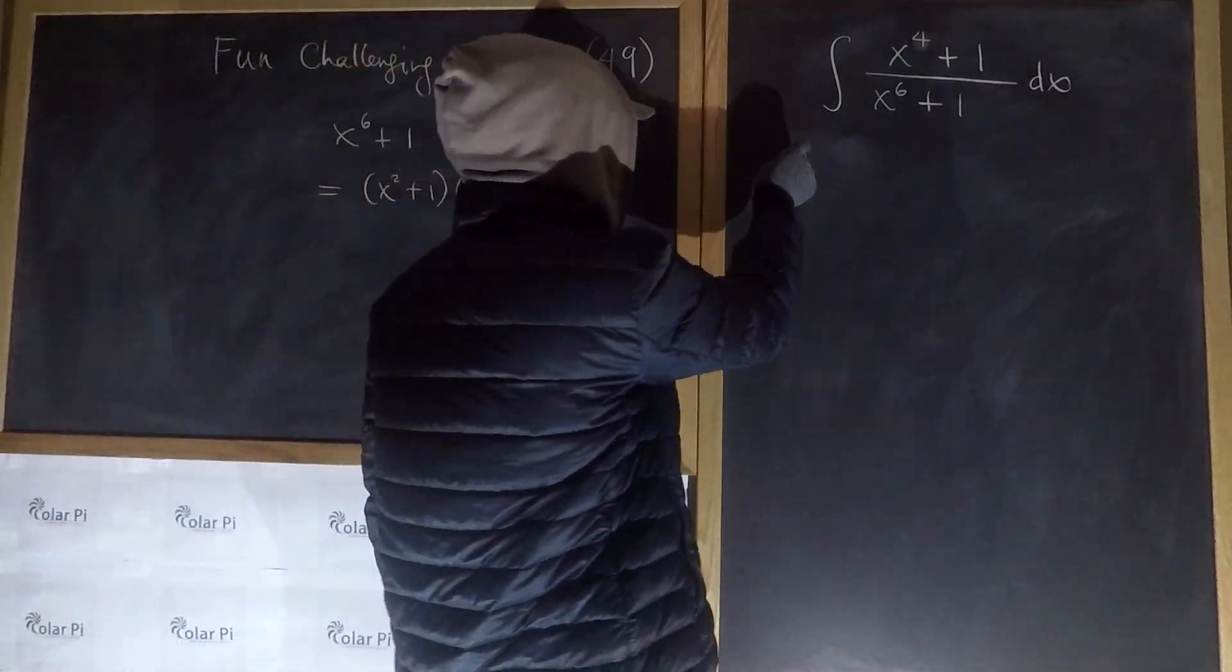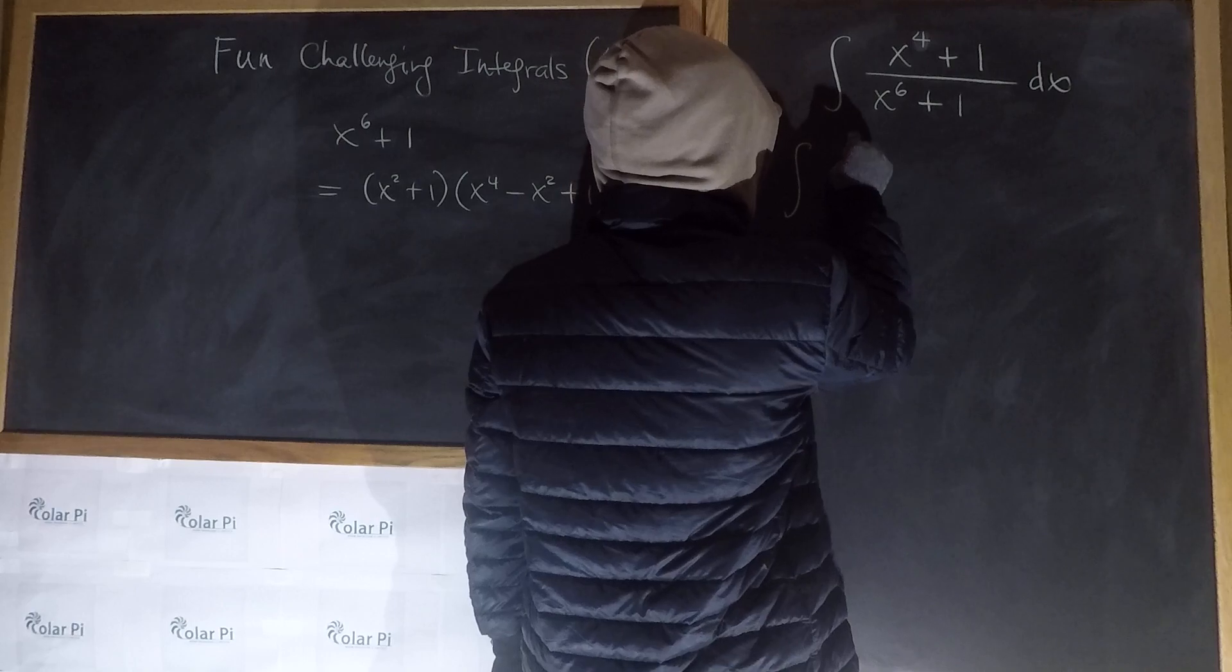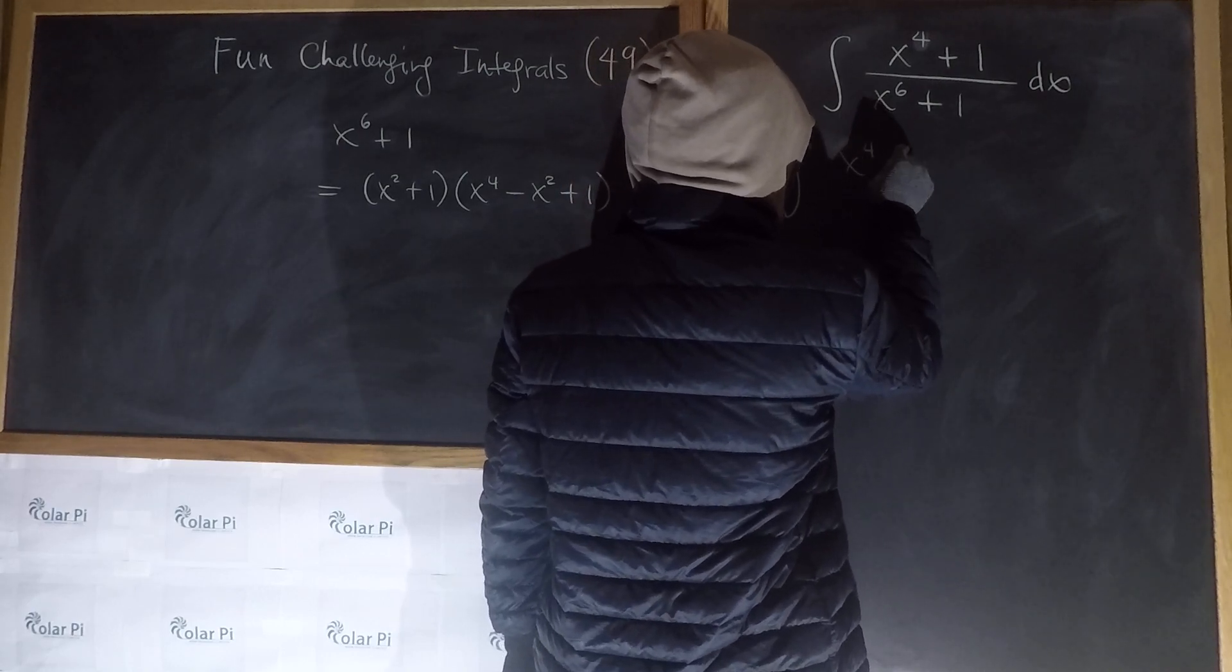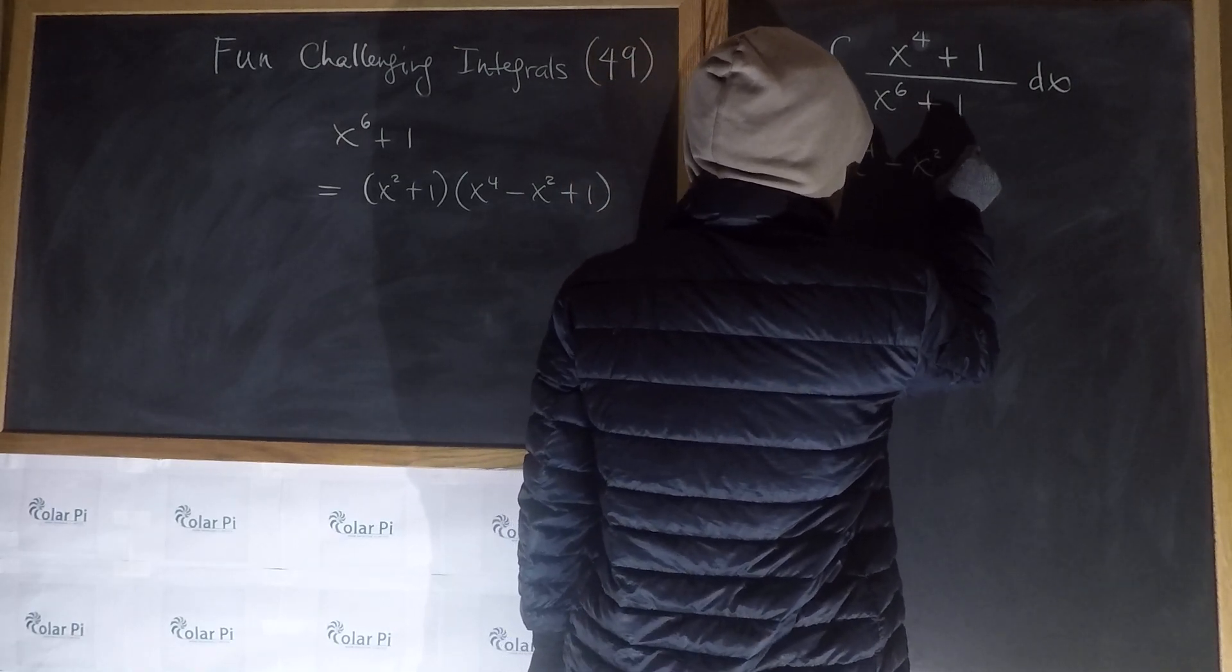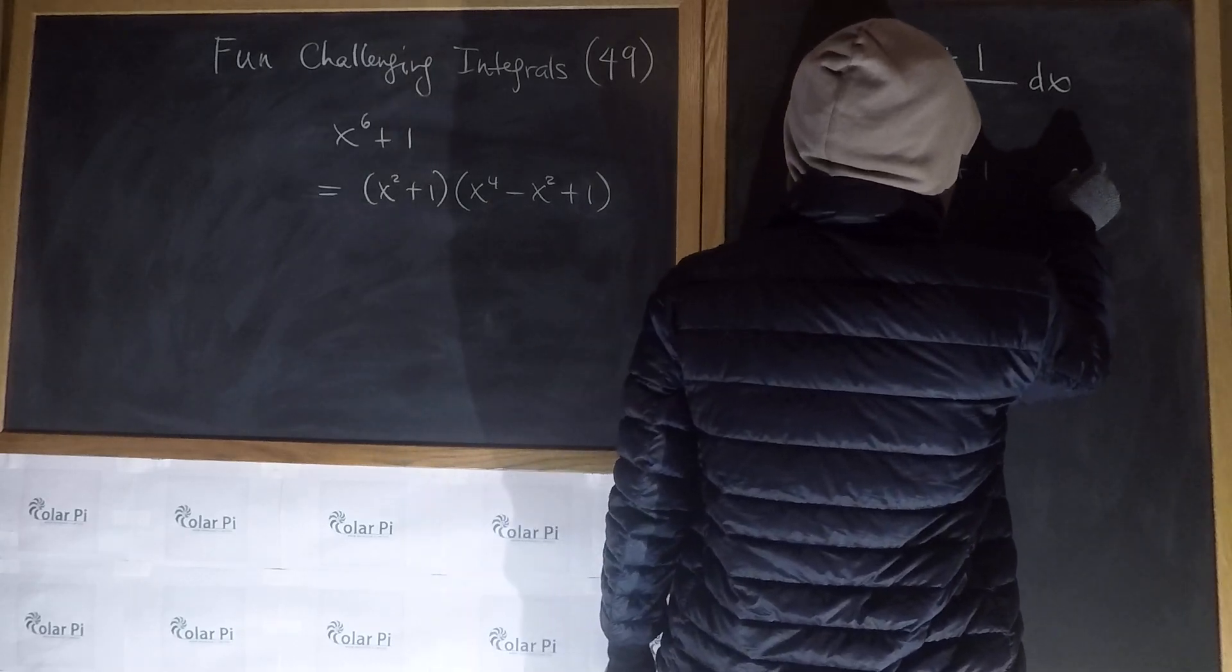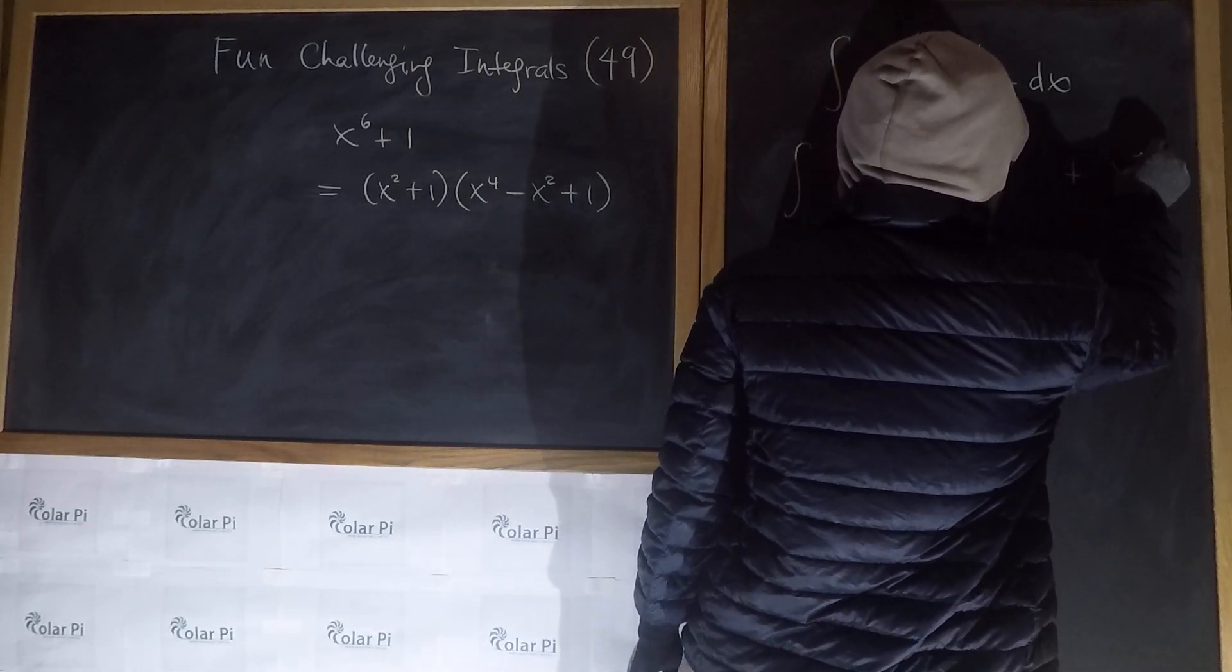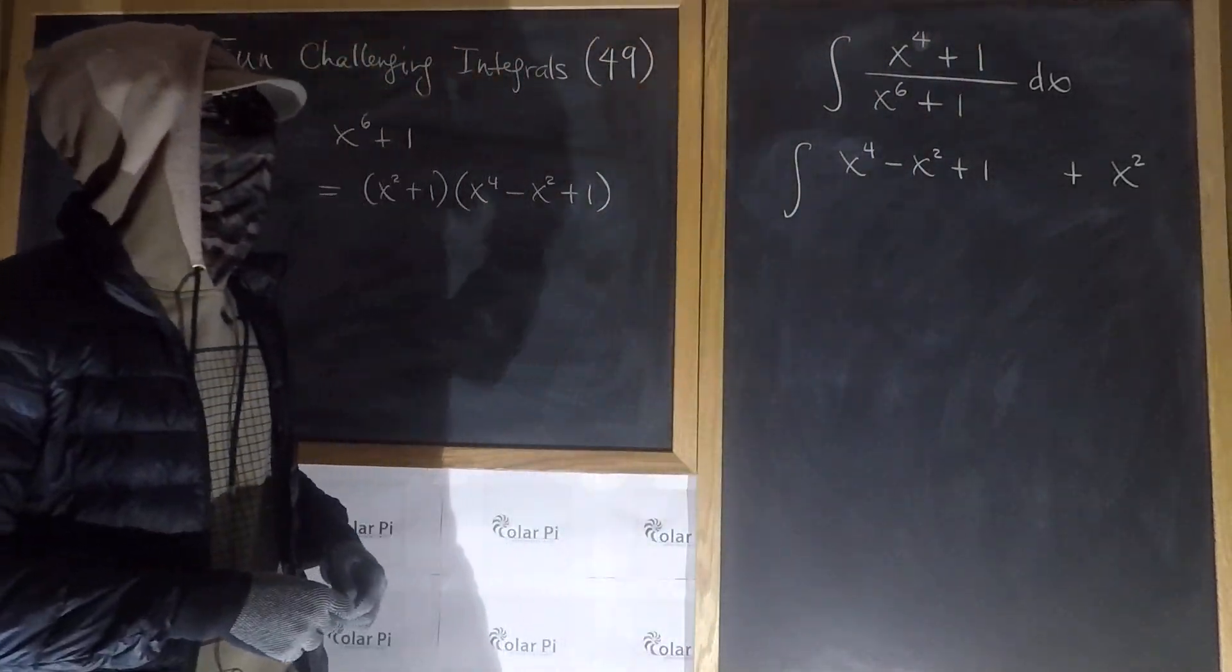And we'd love to have that in the numerator there. So what we do is just write it and make up for it. So we go x to the 4th minus x squared plus 1, and then plus x squared somewhere down there.